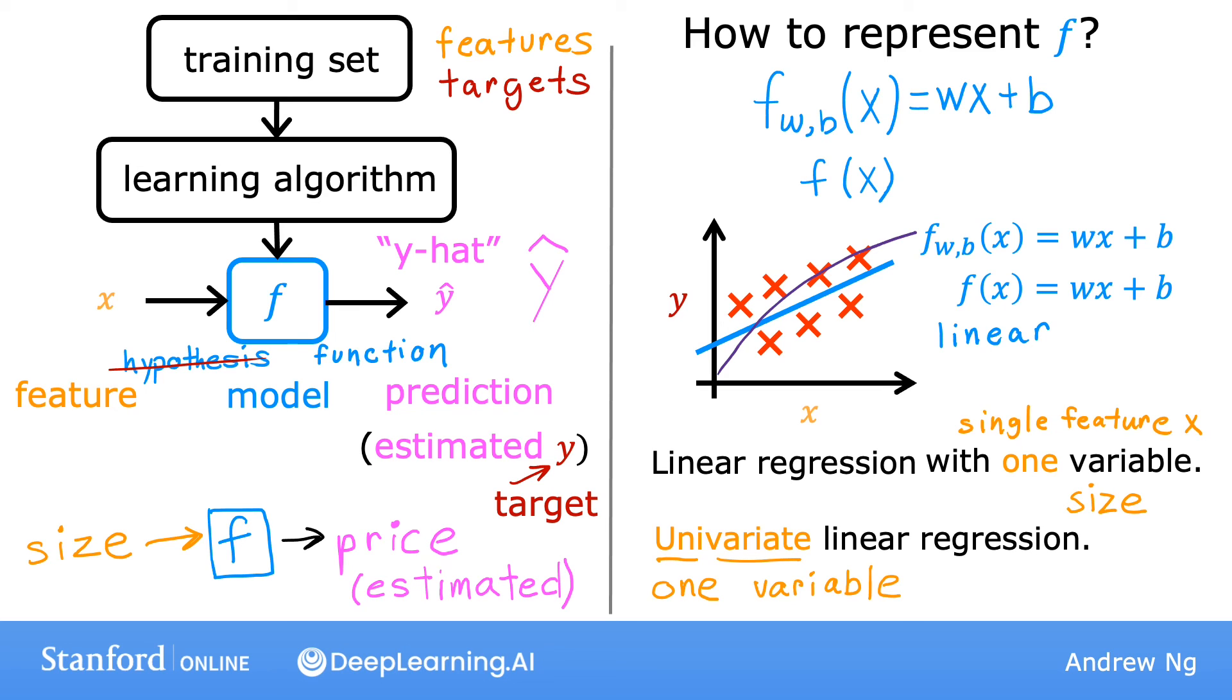In a later video, you'll also see a variation of regression, where you want to make a prediction based not just on the size of the house, but on a bunch of other things that you may know about the house, such as the number of bedrooms and other features.